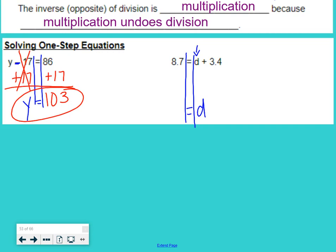We're adding 3.4 to our variable, so we have to undo that. Opposite of plus 3.4 would be minus 3.4. So we do minus 3.4 on both sides to keep that balance. 3.4 minus 3.4, nothing. 8.7 minus 3.4 is 5.3. So our variable, d, equals 5.3.